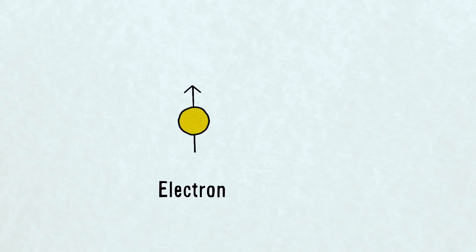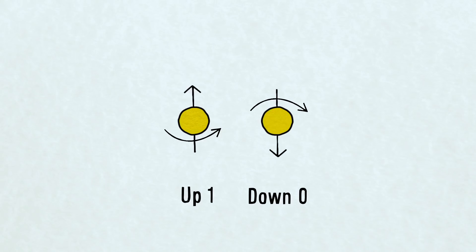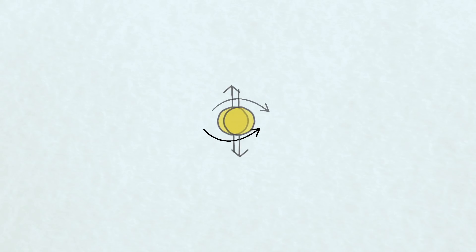These electrons can spin in different ways. When the spin is in this direction, we call it up, and the qubit has value 1. The other direction is down, or 0. And like Schrödinger's cat, the electron can also be in a superposition of up and down.